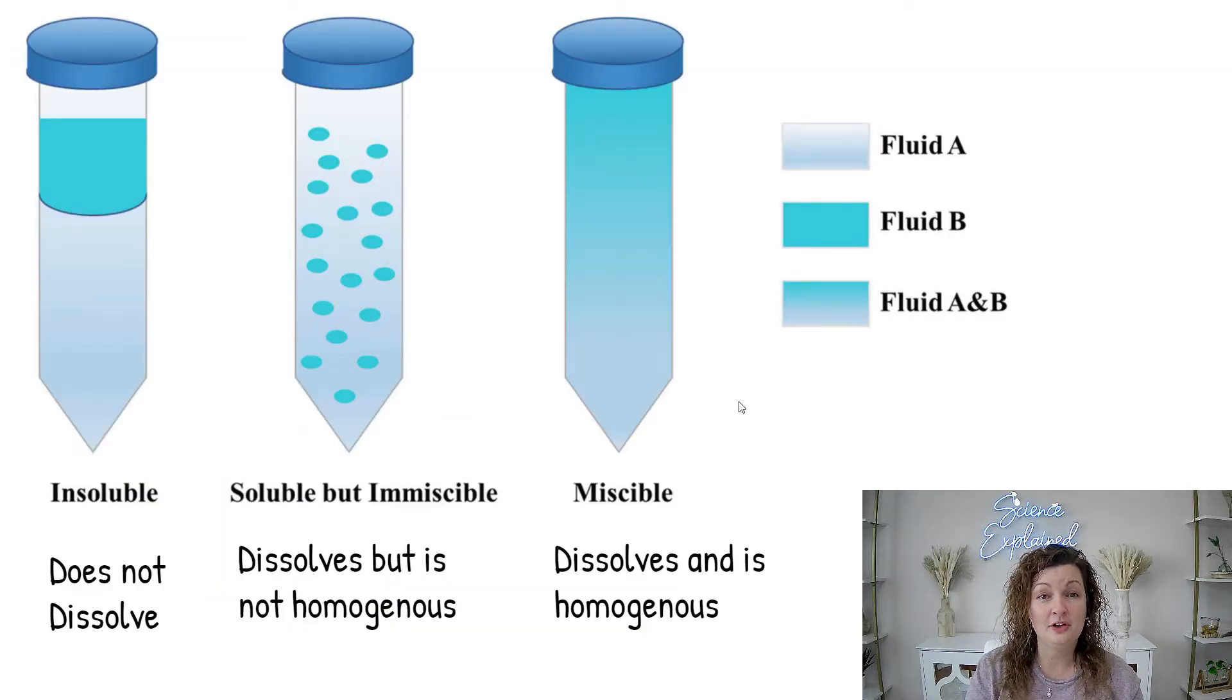Another vocabulary word you need to know is miscible and immiscible. If something is miscible, it will dissolve and become a homogeneous mixture. If something is immiscible, it's not necessarily going to dissolve fully. It might look more like a heterogeneous mixture than a homogeneous mixture.